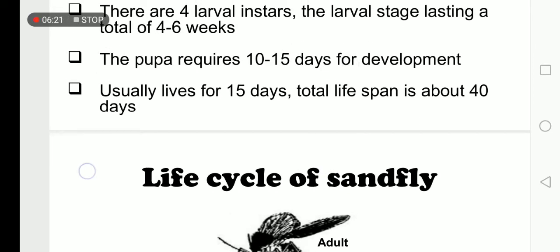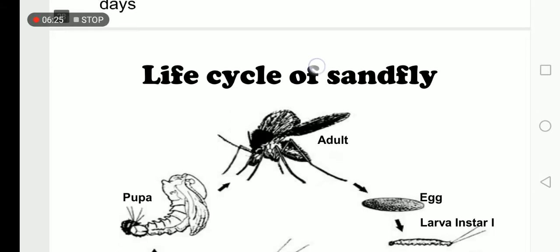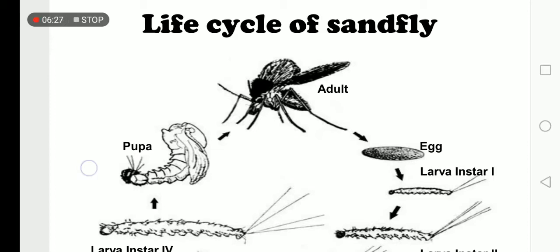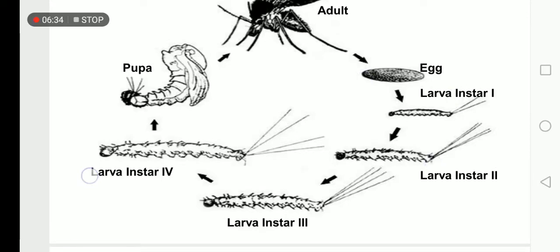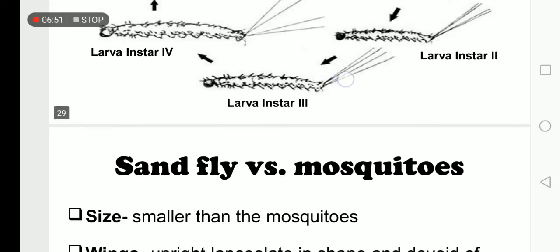Pupae usually require ten to fifteen days for development. This is the life cycle of the sand fly: adult releases eggs, then first larval instar, second larval instar, third, fourth, and the fourth larval instar is converted into pupae, which is then converted into the adult. No obvious limbs are present in the larval stages — larvae are without limbs.